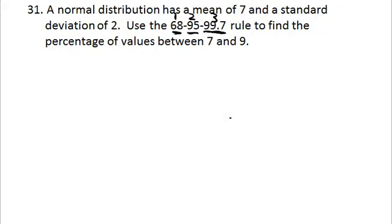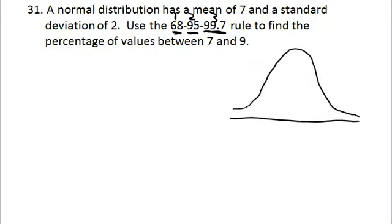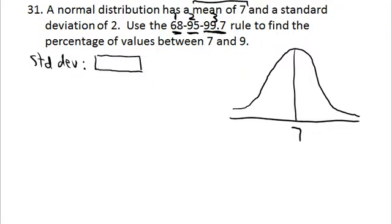As before, do a little sketch to guide your work — it doesn't have to be super accurate. The mean is 7 and the standard deviation is 2, which I think of as a measuring stick or ruler. They ask about values between 7 and 9. The difference between 7 and 9 is 2 units, so there's just one standard deviation between them.